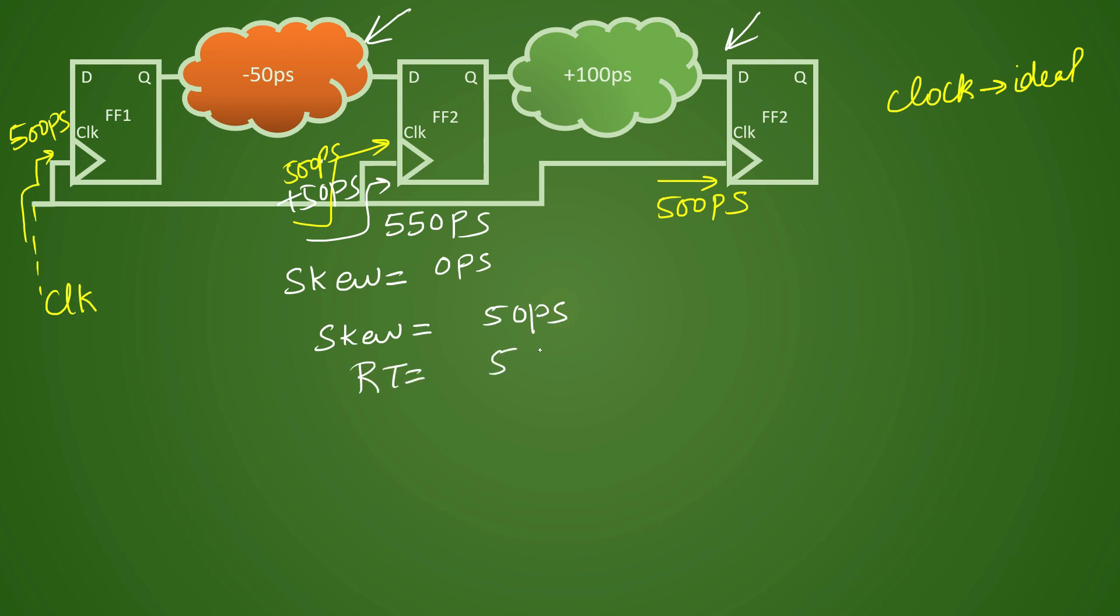So your required time will no longer be 500, will no longer be equivalent to your clock period, it will be 50 picoseconds plus your clock period. Whatever the clock period is that doesn't matter in this case because it was violating whatever the clock period was, it was violating with minus 50 picoseconds earlier. Now you have extra required time.